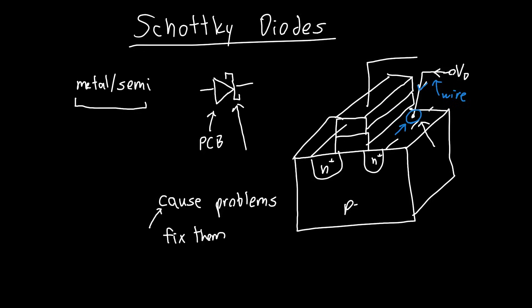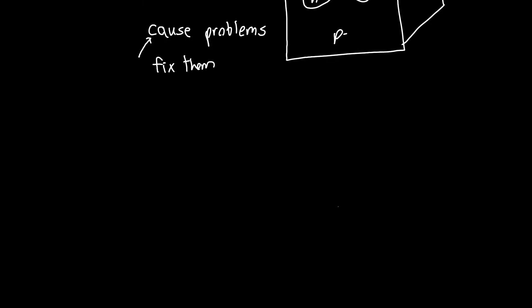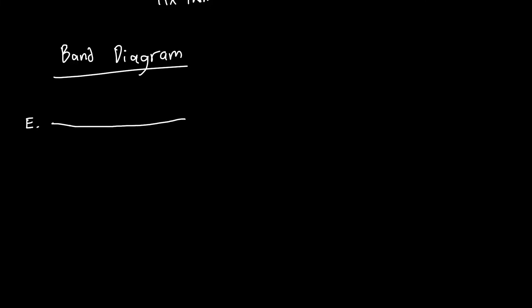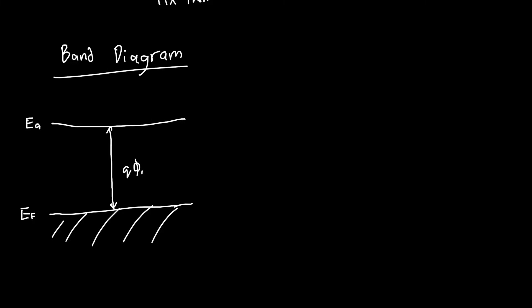So how do we understand what happens at a metal-semiconductor junction? Well, if you've been watching the other videos in this playlist you'll know that we need to start with a band diagram. This is the most powerful tool we have in device physics and generally our starting point. For a metal, we've got some vacuum level and some Fermi level, and beneath the Fermi level — because this is a metal — we've got essentially a sea of electrons. The distance between the vacuum level and the Fermi level is q times the metal work function φ_m: the energy needed to strip an electron from the Fermi level up to the vacuum level.